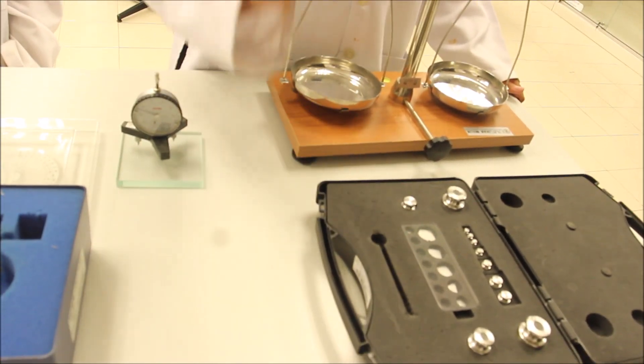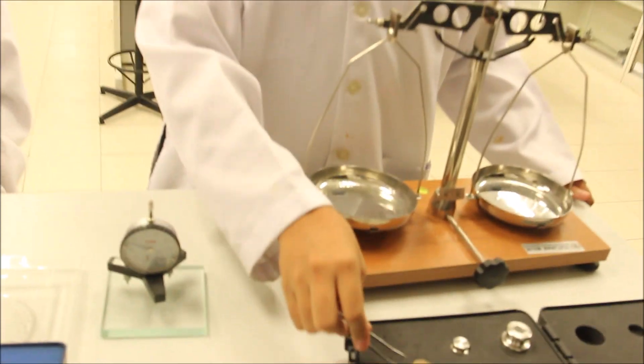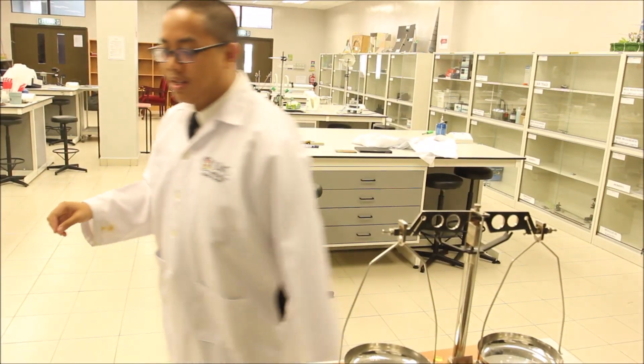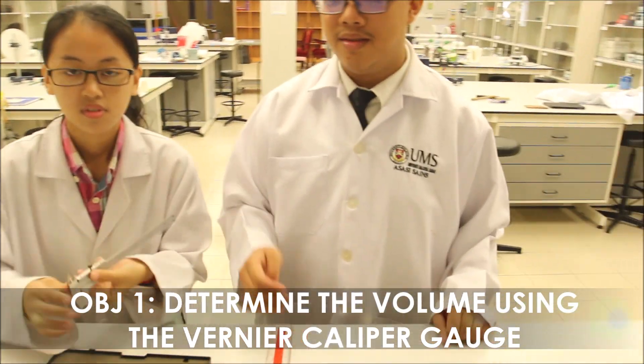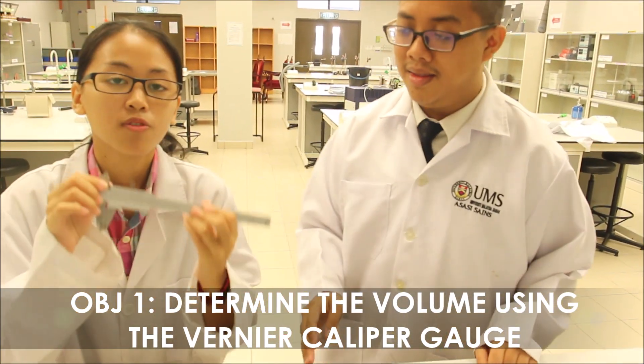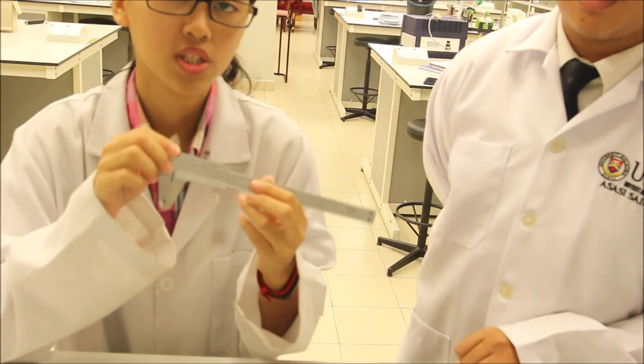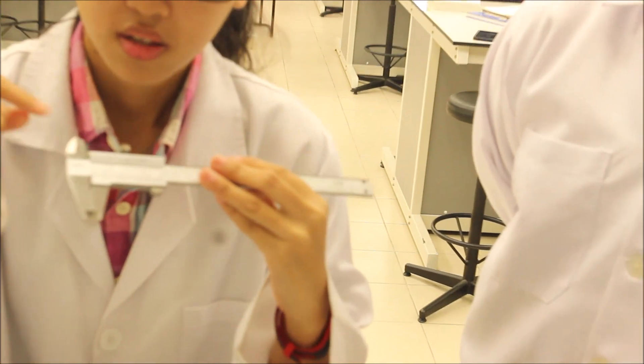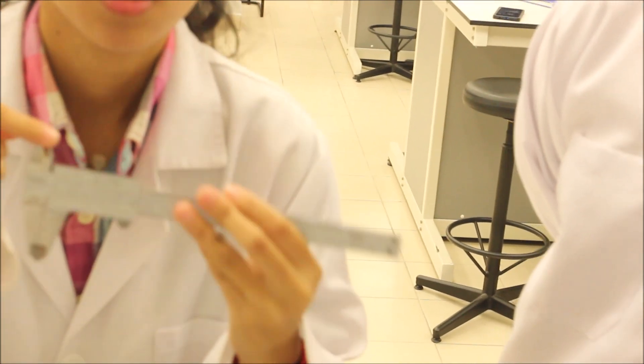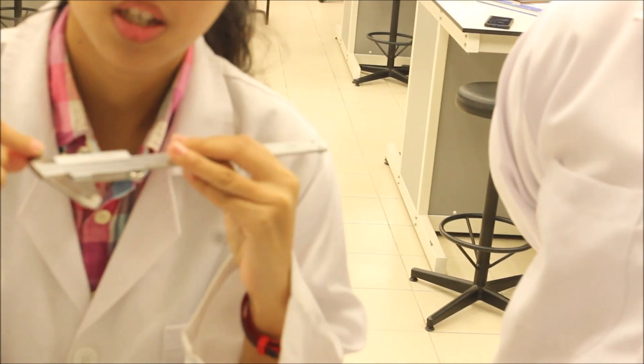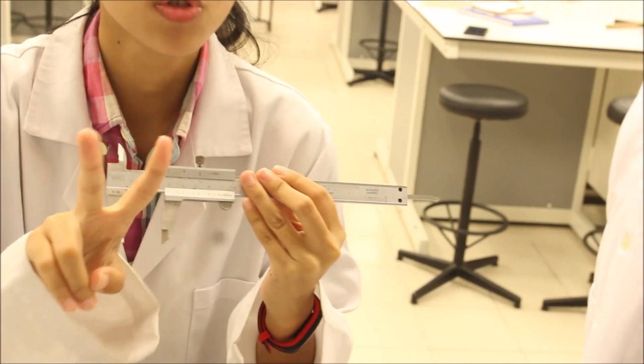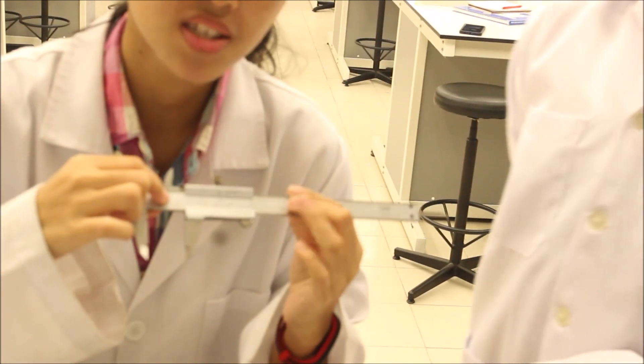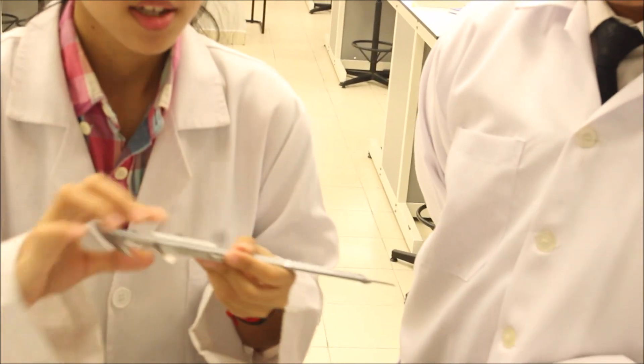Shall we start? We shall start with the first one, which is to determine the volume of tubes using the vernier caliper. For the vernier caliper, there are a few parts that we need to know. It has two jaws. This is to measure the inner diameter, and this one is to measure the outer diameter. And then it has two scales, which is the main scale and the vernier scale.